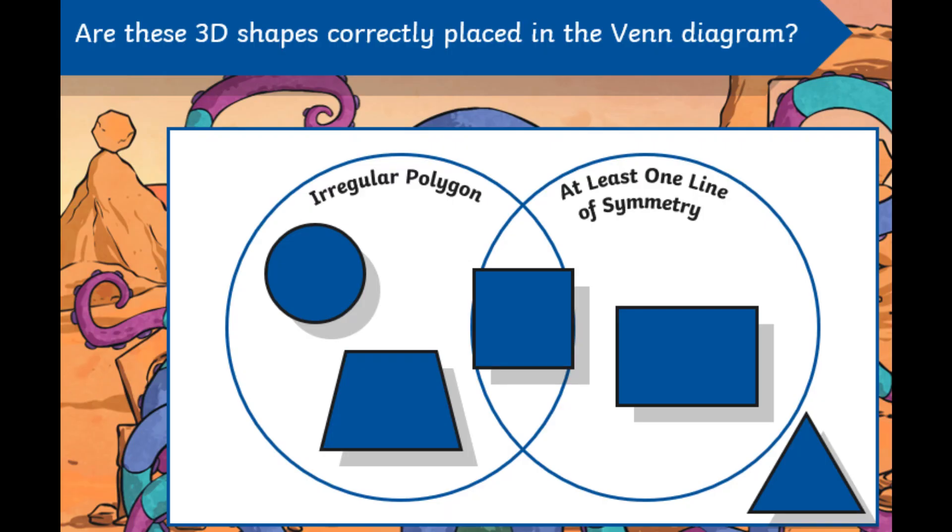Let's have a look at the next problem today. So we're on to a Venn diagram. Now we have got one, two, three, four, five shapes. Are they all placed in the correct location on that Venn diagram? So on the left, we've got irregular polygon. On the right, shapes have to have at least one line of symmetry. Think about that part in the middle where the two overlap. So whatever shape goes in there has to fit both those criteria.